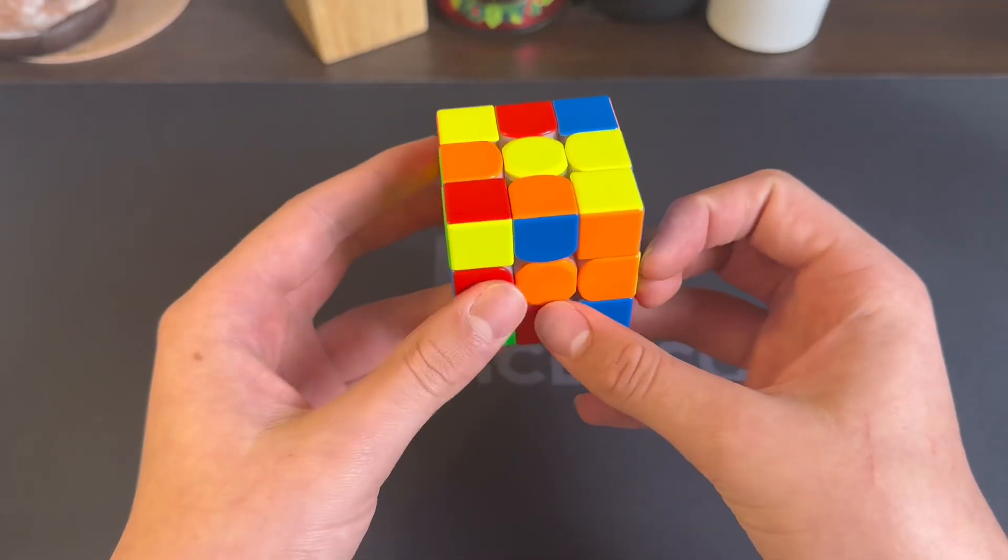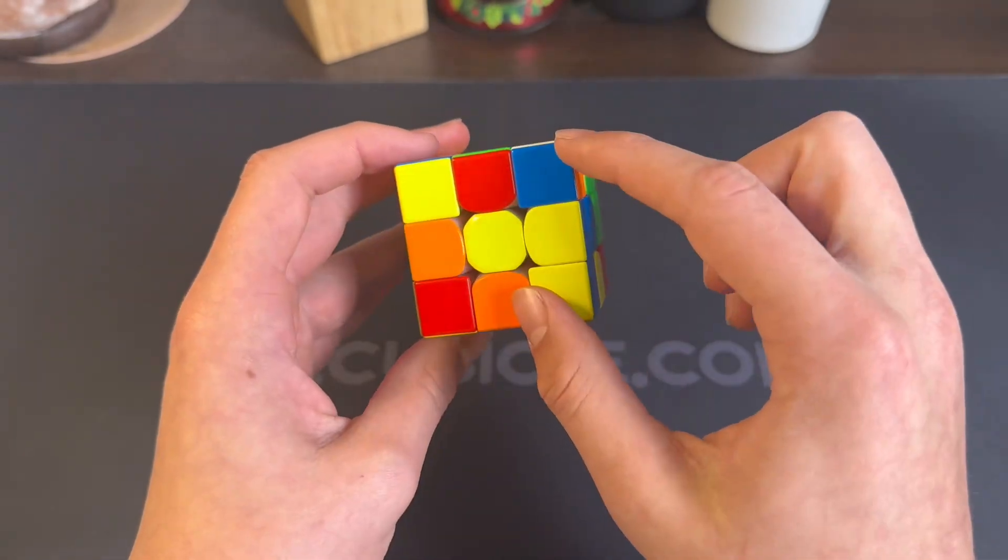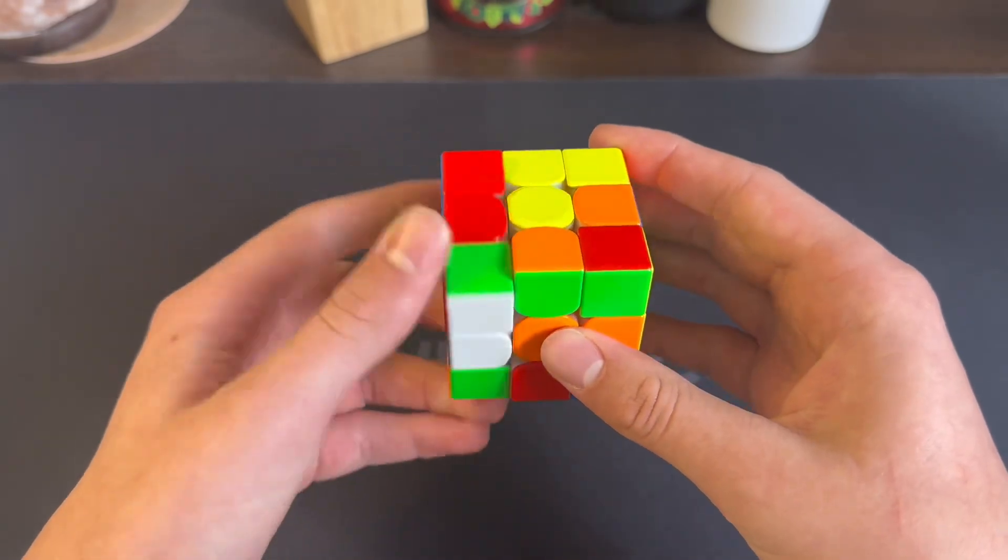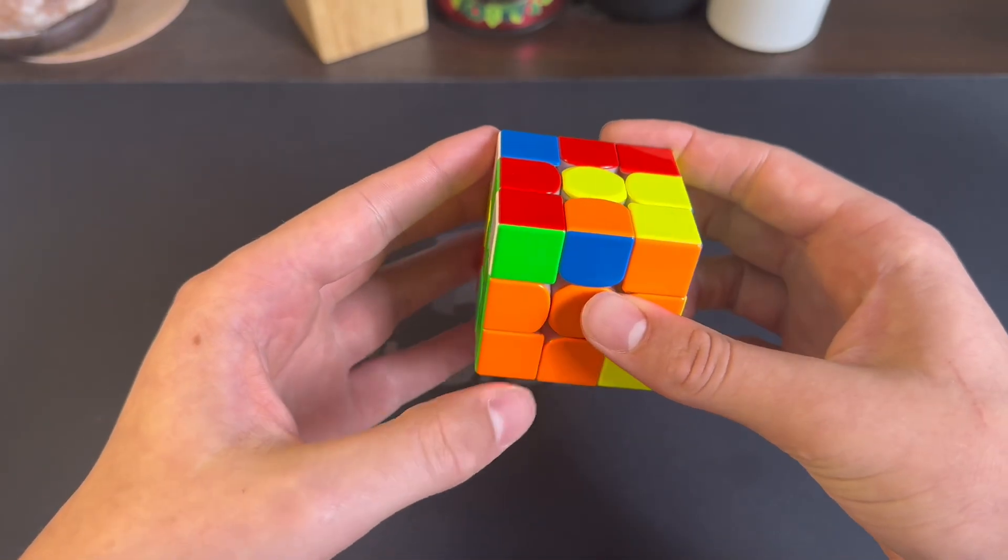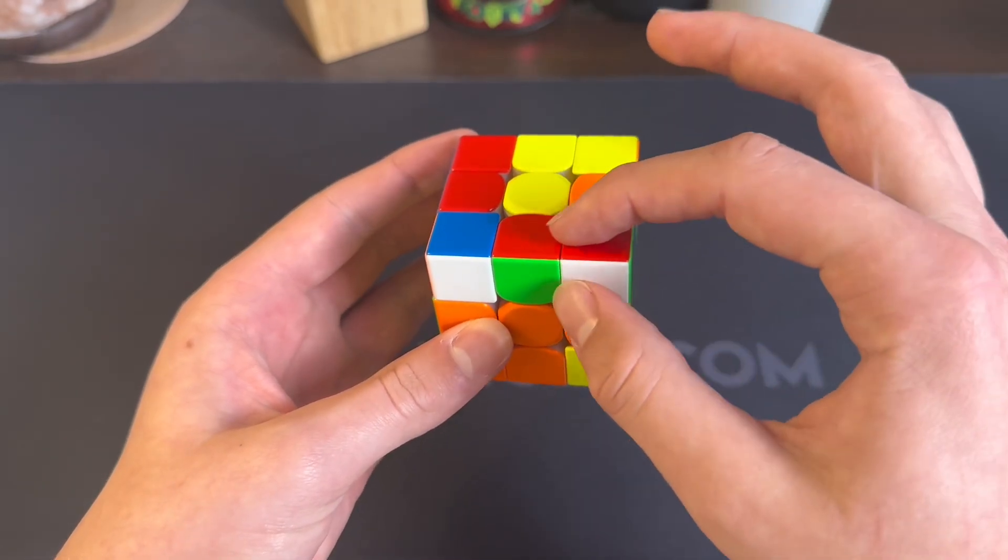So we're going to do an X cross. Now rotate and I'm going to solve this edge right here and make this a free pair at the same time. So I'll do U prime, insert the edge like that, D2, and that makes the X cross. And then you just got the free pair right here.